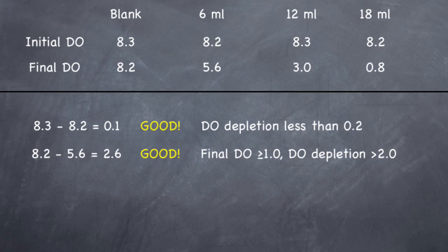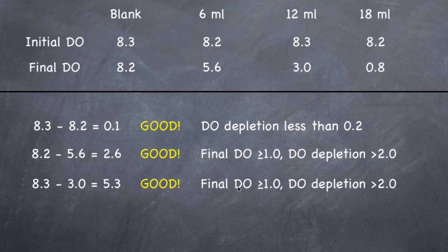So let's do the next sample. So 8.3 initial minus 3 final equals 5.3. Is this sample okay? Yes. Final DO is greater than or equal to 1, so this number. And DO depletion was greater than or equal to 2, this number.